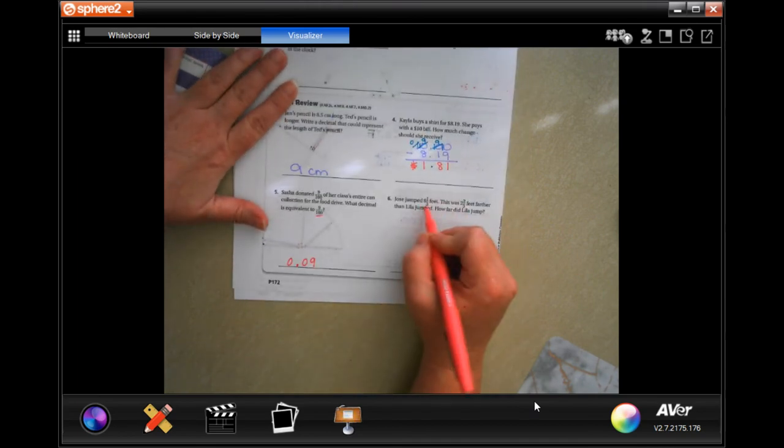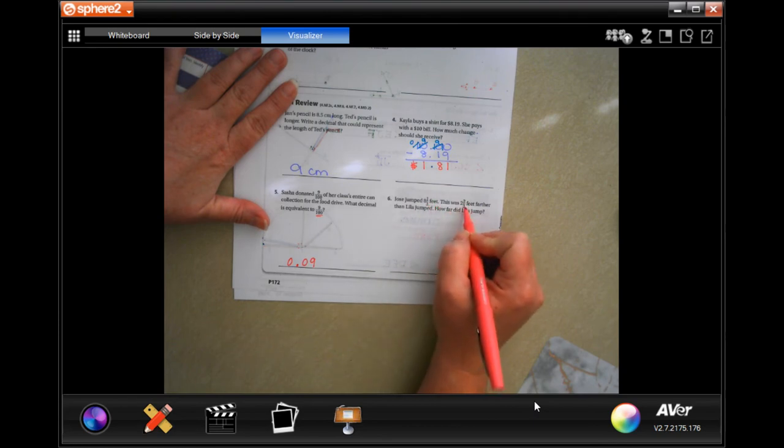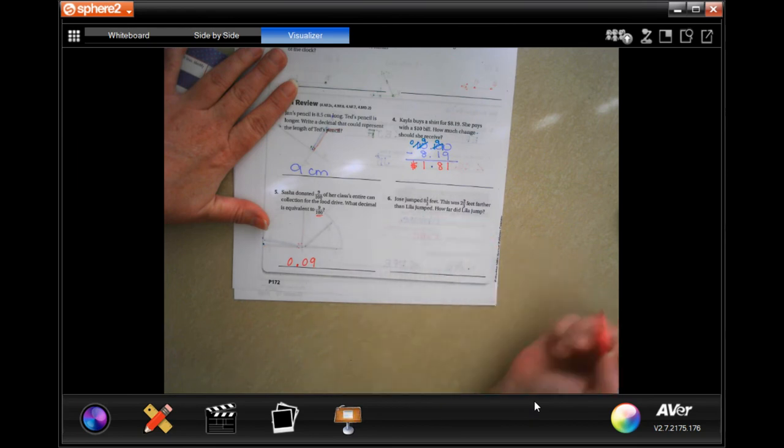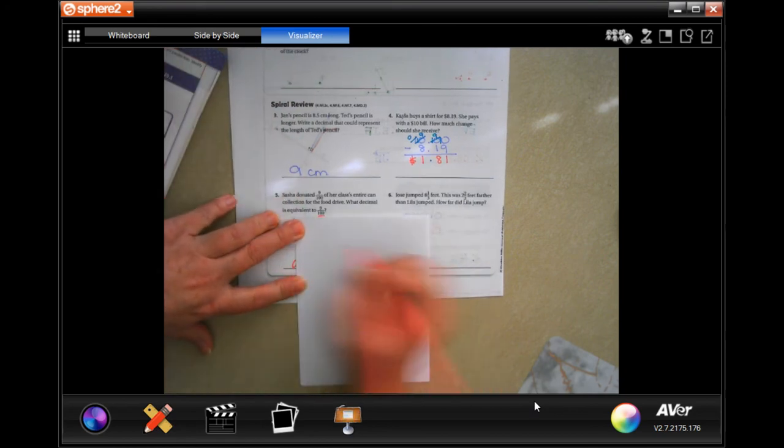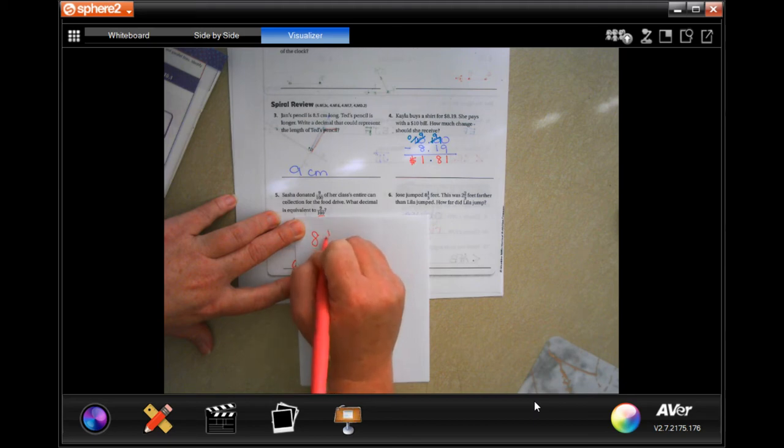Jose jumped 8 and 1/3 feet. This was 2 and 2/3 feet farther than Lila jumped. How far did Lila jump? Let's find out. I'm going to grab a piece of scrap paper.